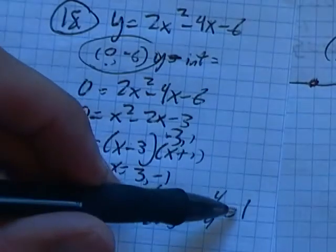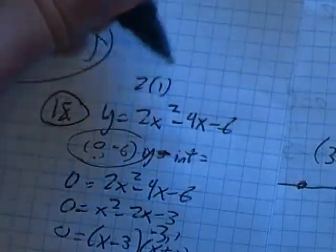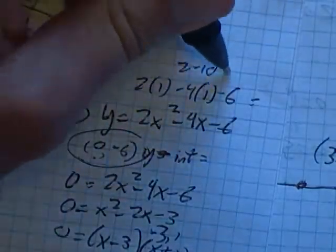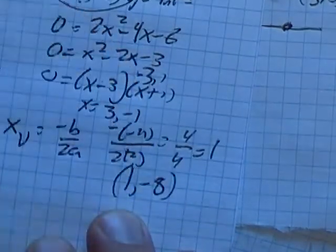So if that's a 1, I can take it, plug it back into my original equation. 2 times 1 squared minus 4 times 1 minus 6. That's 2 minus 10, negative 8. So my vertex is at 1, negative 8.